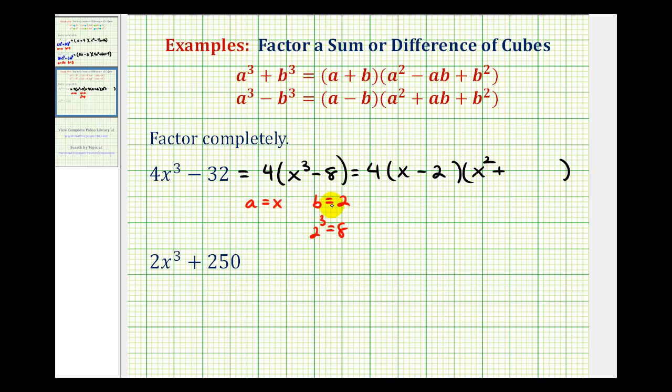Plus b². And if b is equal to two, b² would be 2² or four. One more thing to remember here is that this trinomial factor is not going to factor further. So now we factor this completely.